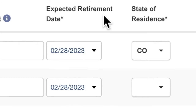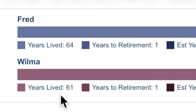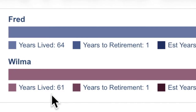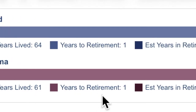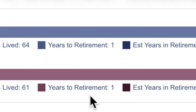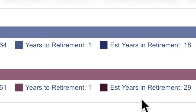Wilma wants to retire when Fred retires. Wilma has lived 61 years, has one year until retirement, and has about 29 years in retirement.